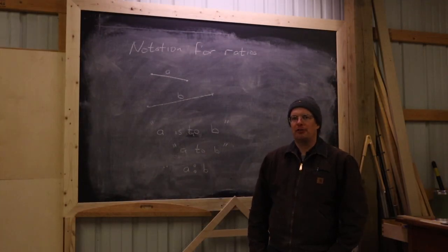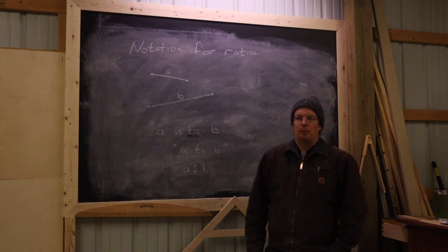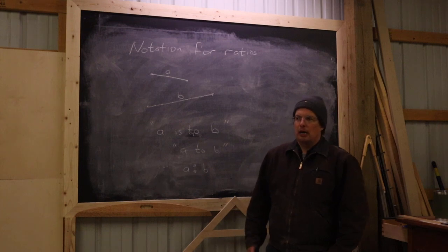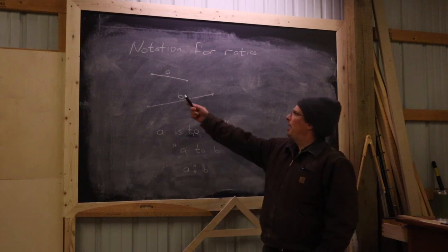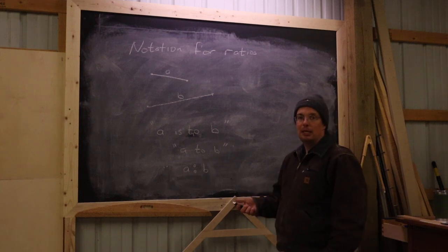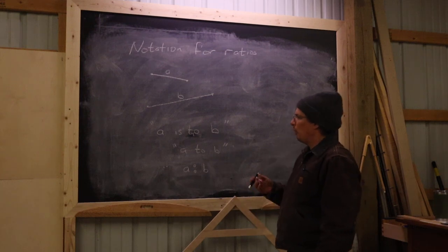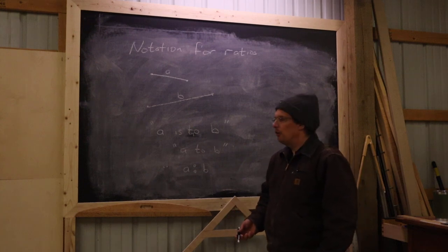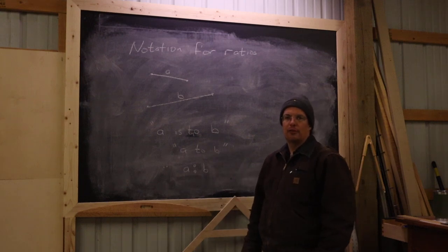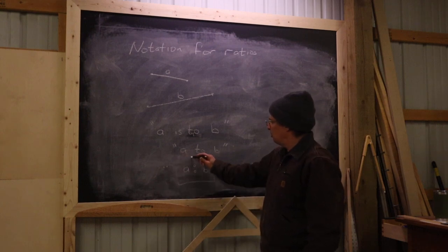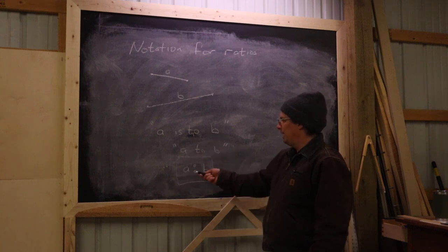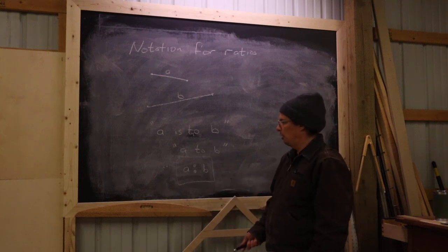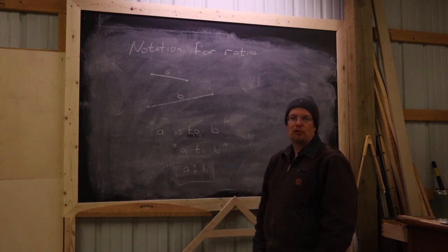Before moving on, it's worth pointing out the standard modern notation for ratios. If we have two magnitudes — lengths of line segments A and B — and we want to compare them within a ratio, we would say 'A is to B.' A shorter version is 'A to B.' The symbol A colon B is read the same way: A to B, or A is to B. You'll often see this shorthand notation used when writing about geometry, ratios, and proportion.